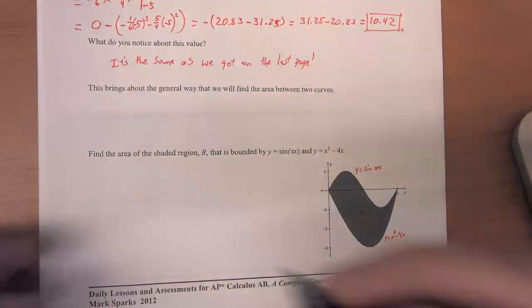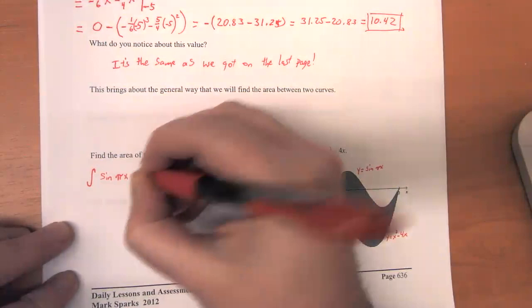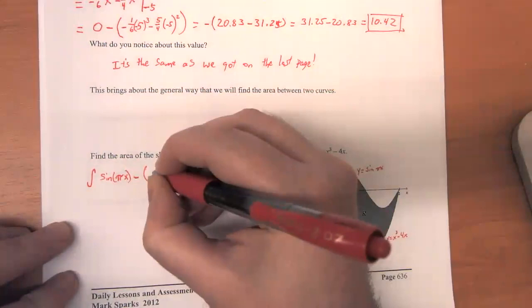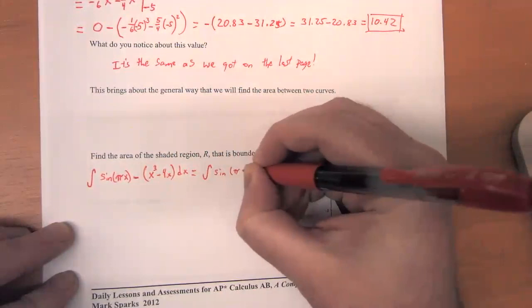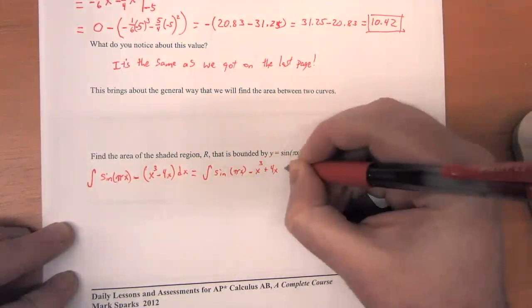Since this is the top curve and this is the bottom curve, we're going to subtract these two numbers. So we want to calculate the definite integral of sine of pi x minus x cubed minus 4x dx, which is equal to sine of pi x minus x cubed plus 4x dx.